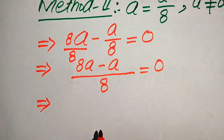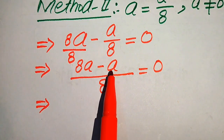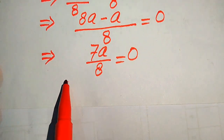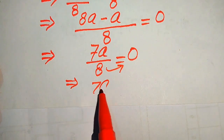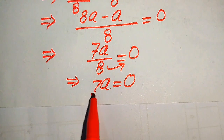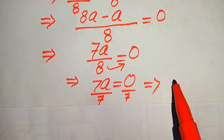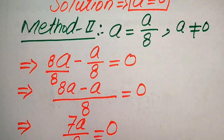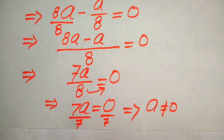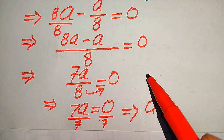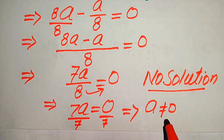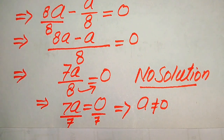In the next step, we move the 8 to the right hand side: 7a divided by 8 is equals to 0. Moving 8 to the right hand side gives 7a equals 0. Dividing both sides by 7 gives a equals 0. But at the start of this method we assumed a is not equals to 0, so this is a contradiction. According to the second method, this equation has no solution other than a equals 0.